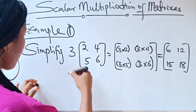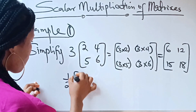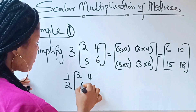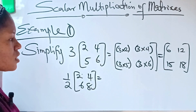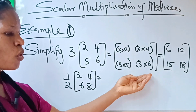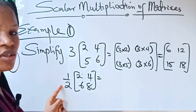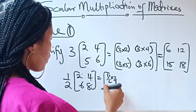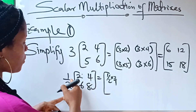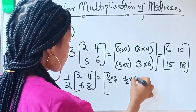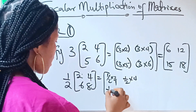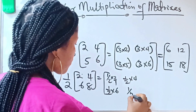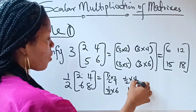Let's do another one. Simplify ½ multiplied by the matrix [2, 4; 6, 8]. Just like we did before, we are going to multiply each element by ½. So we'll have: ½×2, ½×4, ½×6, and ½×8.